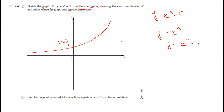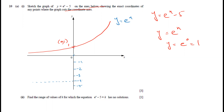Now for y = eˣ - 5, we need to shift the graph of y = eˣ down by 5 notches. Marking the y-axis: -1, -2, -3, -4, -5. The whole graph shifts down by 5 units, so the intersection point moves down to minus 5.